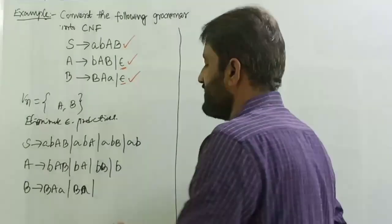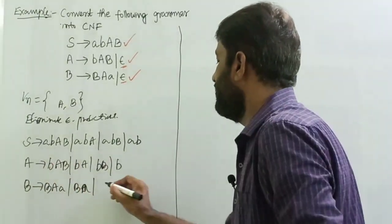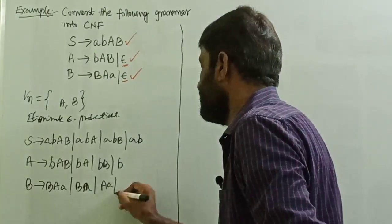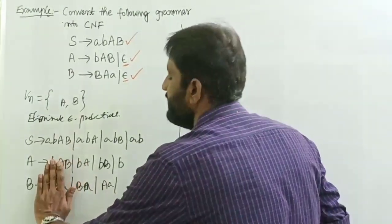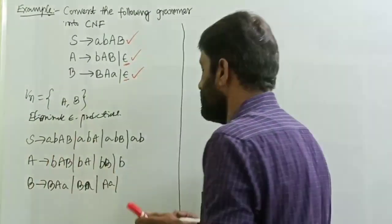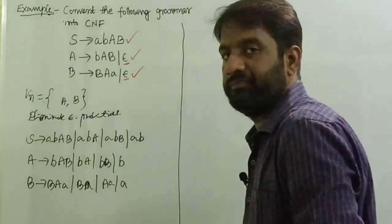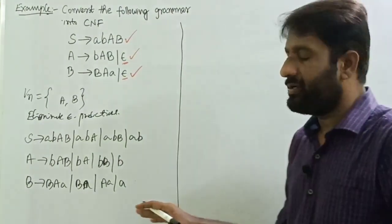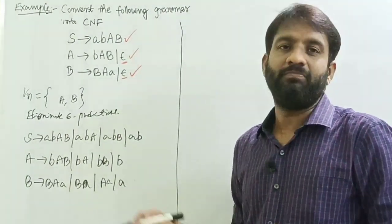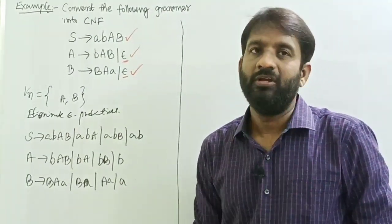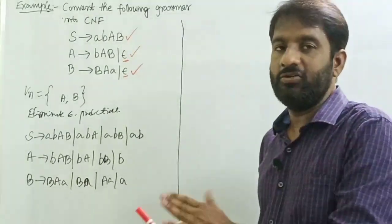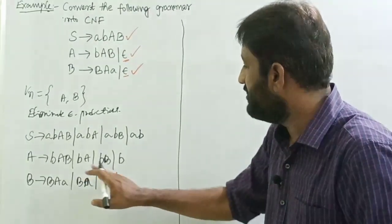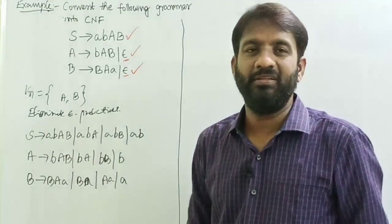If I replace capital B with epsilon, what remains is A only. If I replace both A and B at the same time with epsilon, what remains is A only. This is the grammar after eliminating epsilon productions. Next, identify if there are any unit productions — as you can see, there are no unit productions in the grammar.